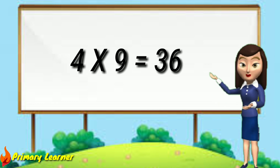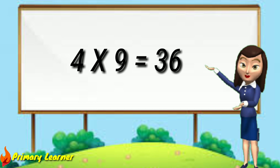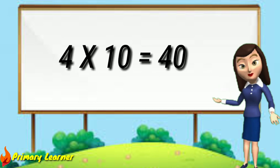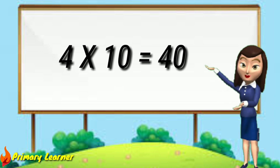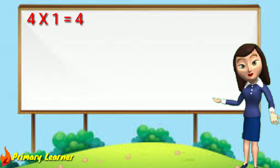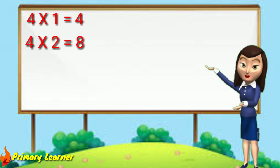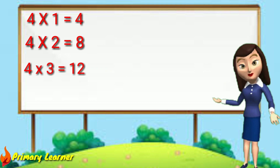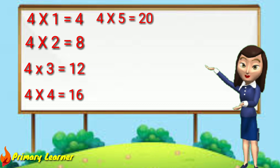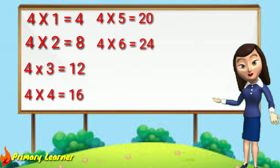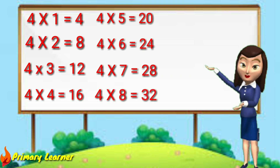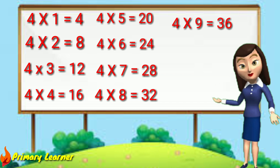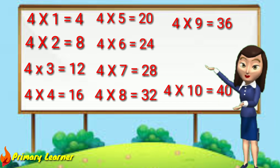4 nines are 36. 4 tens are 40. 4 ones are 4, 4 twos are 8, 4 threes are 12, 4 fours are 16, 4 fives are 20, 4 sixes are 24, 4 sevens are 28, 4 eights are 32, 4 nines are 36, 4 tens are 40.